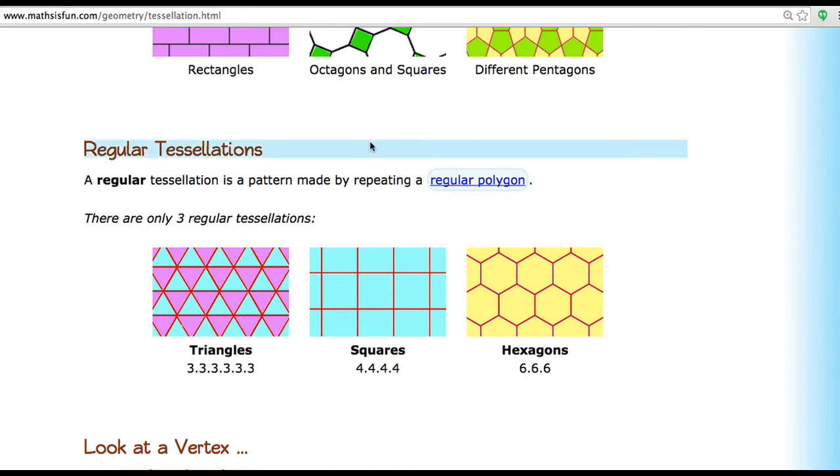Now look at regular tessellations. A regular tessellation is a pattern made by repeating a regular polygon, which is what we just learned. There are only three regular tessellations.